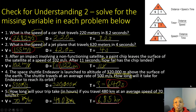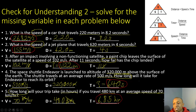Let's see how you did on your second check for understanding. Number one: what is the speed of a car that travels 220 meters in 8.2 seconds? We're solving for speed. Distance is 220 meters, time is 8.2 seconds. Speed = distance ÷ time: 220 ÷ 8.2 = 26.82 meters per second.